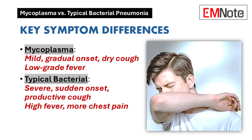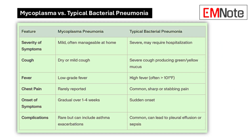Mycoplasma pneumonia often has much milder symptoms, while typical bacterial pneumonia tends to hit a lot harder and faster. We have a chart that compares symptoms side by side. One of the first things to look at is the cough. With mycoplasma, you typically see a dry cough, or if there's mucus, it's very minimal. Typical pneumonia usually involves a more severe cough with more colorful sputum production. The character of the cough itself can be really valuable.